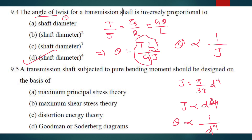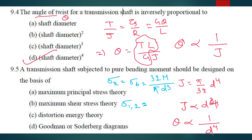Next question: A transmission shaft is subjected to pure bending moment. It should be designed on the basis of which theory? Here σx = σB = 32M / (π×D³). Since there is no shear and no σY, you will get the same value — it equals σB. So here we will use the maximum principal stress theory. A is your answer.